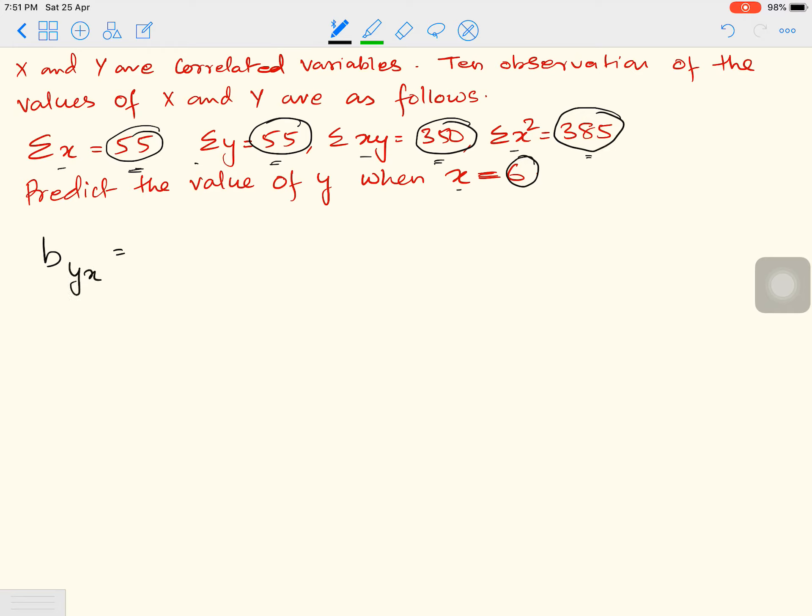So BYX equals Sigma XY minus Sigma X into Sigma Y divided by N, whole divided by Sigma X squared minus Sigma X whole squared by N.